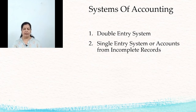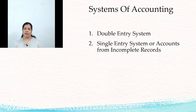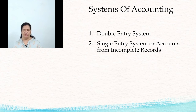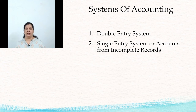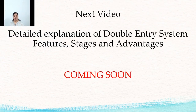The next topic is the system of accounting. There are two types: the double-entry system and the single-entry system. The double-entry system is the modern form of accounting in which business transactions are recorded in two ways — every transaction has two effects: a debit effect and a credit effect. The single-entry system is also known as the incomplete record of accounting, because some transactions are recorded on a dual basis and some only on a single entry, and only personal accounts and cash records are maintained.